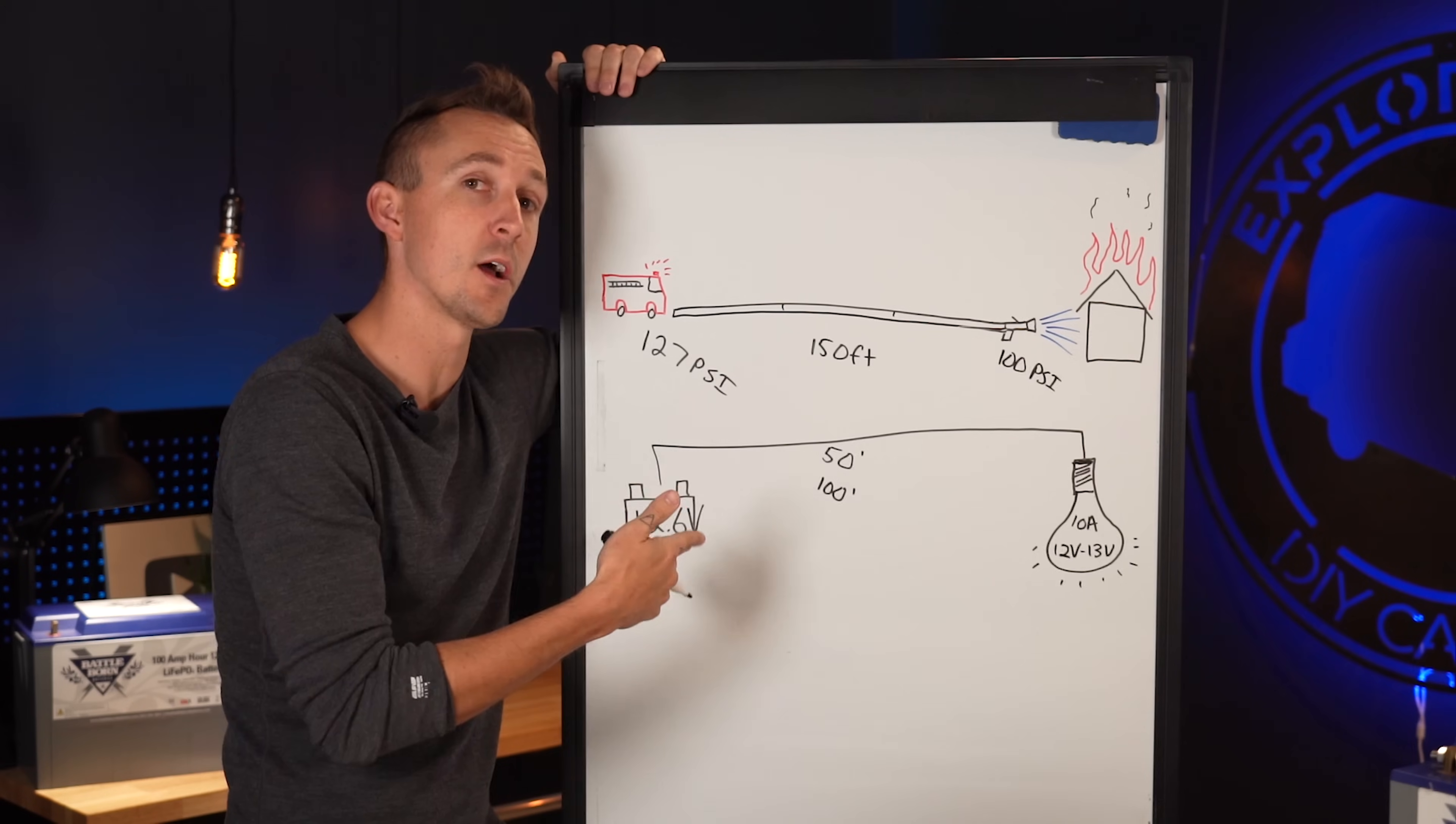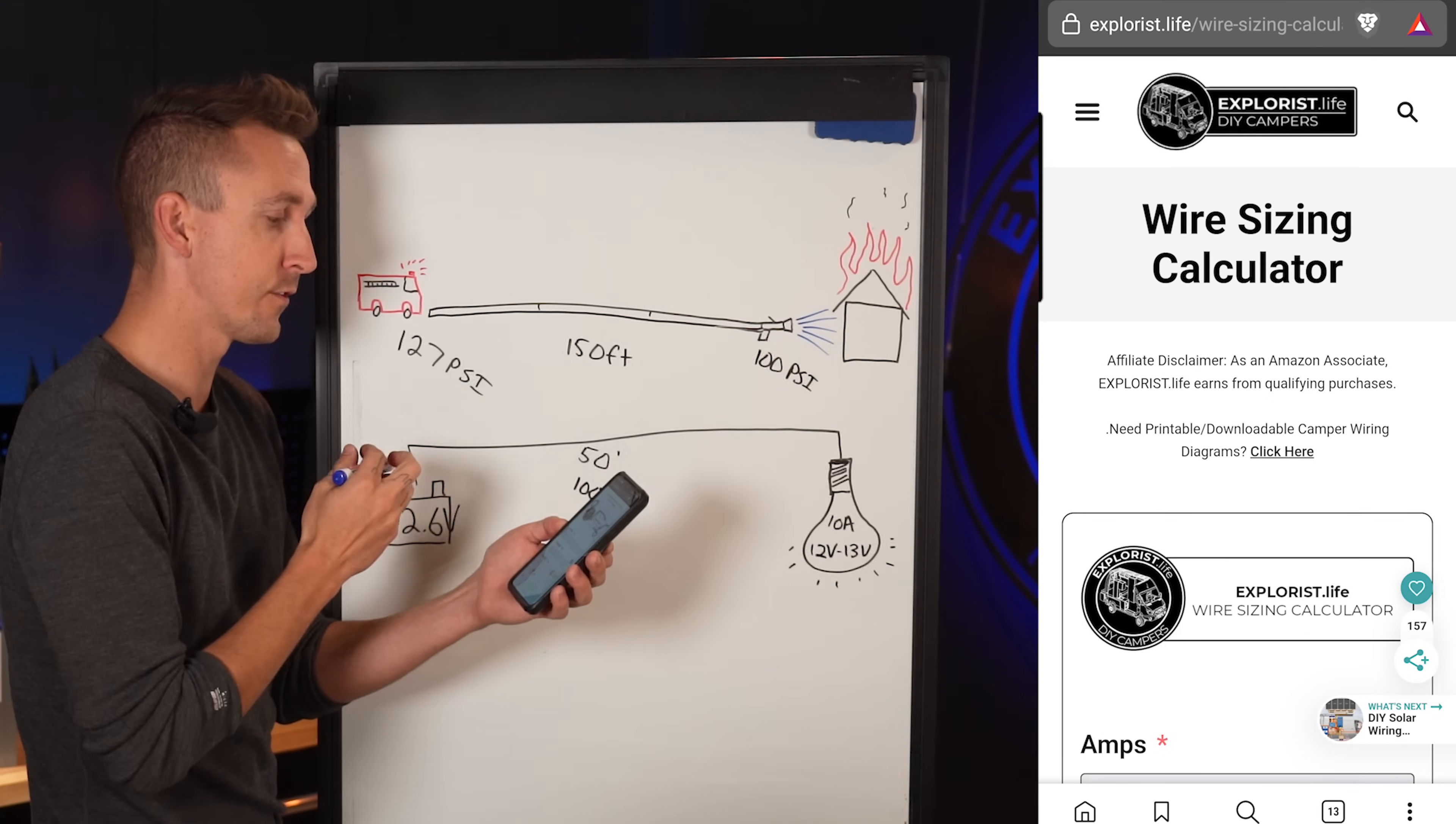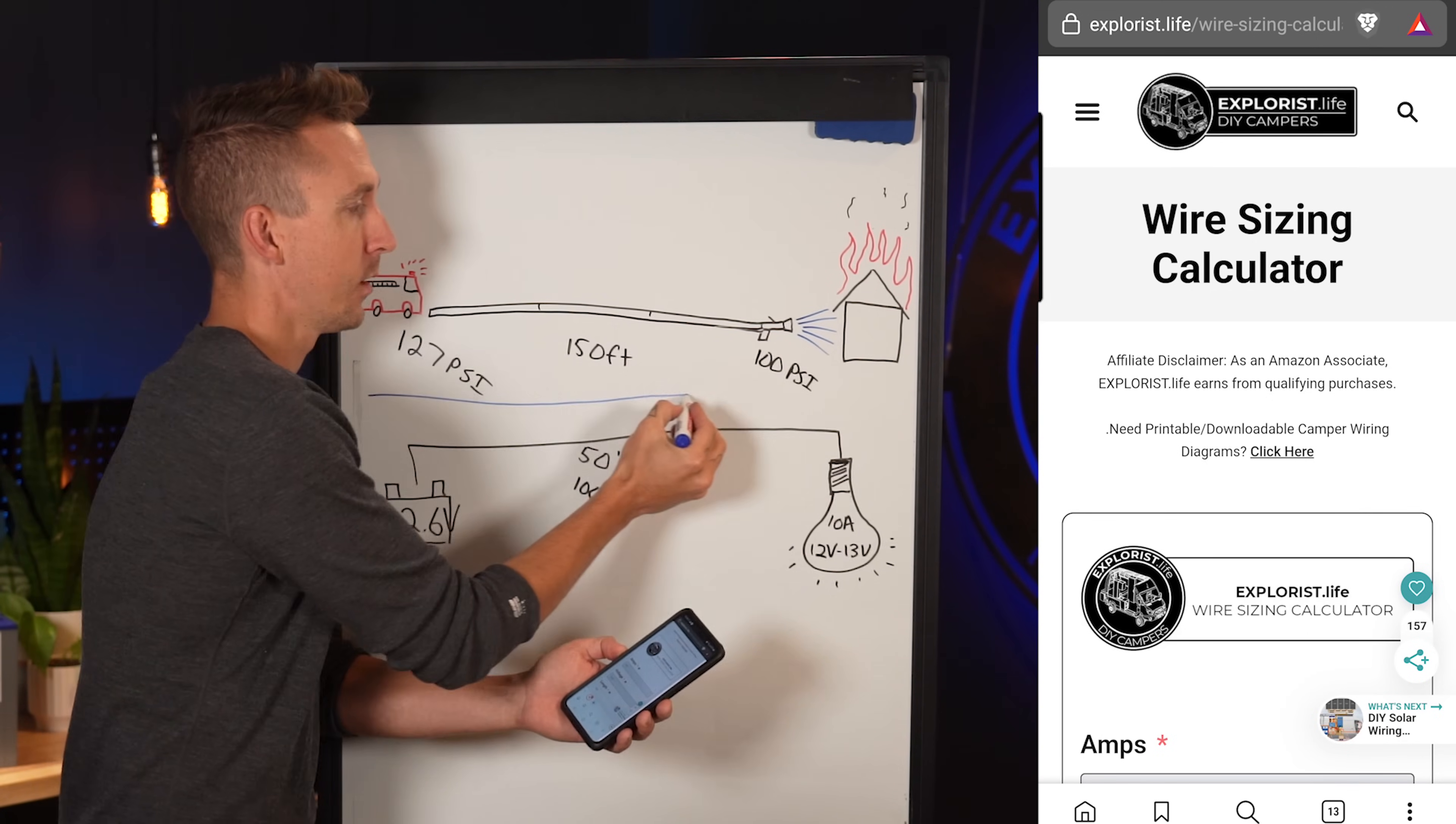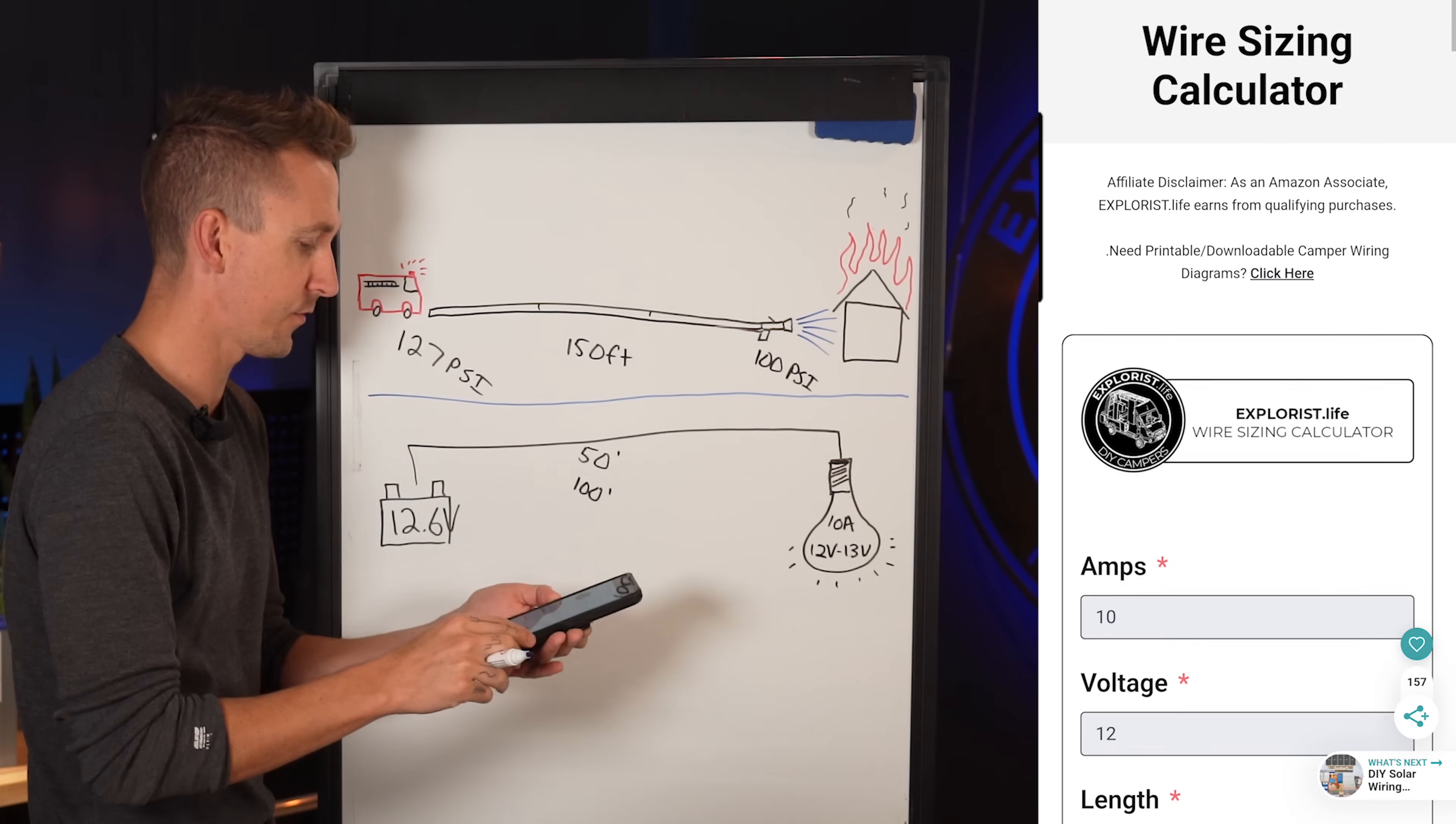Now voltage drop can happen on both the positive and the negative wire. For everything we're about to talk about, I'm also referencing the Explorers Life wire sizing calculator, which I made a while back because it has some of the information that we need for sizing wire, but also talks about voltage drop a fair amount.